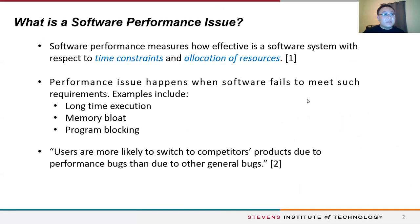Software performance measures how effective a software system is with respect to time constraints and allocation of resources. Bad performance can result in long-term execution, memory bloat, and even program crash. According to the previous study by Zaman et al., users are more likely to switch to competitor products due to performance issues than due to other general types of issues.